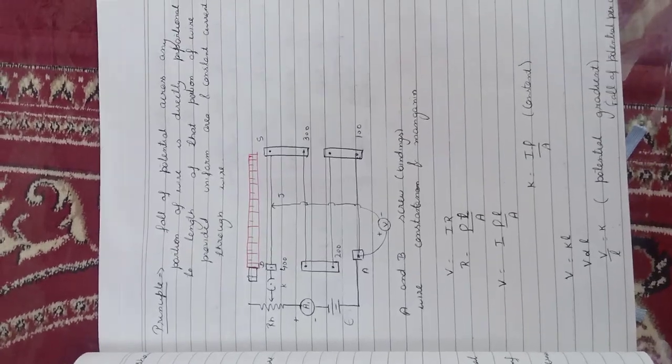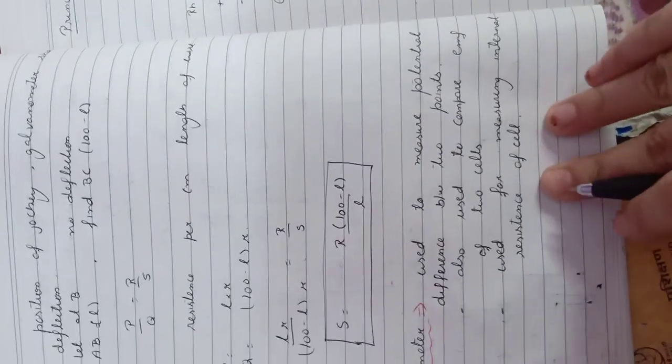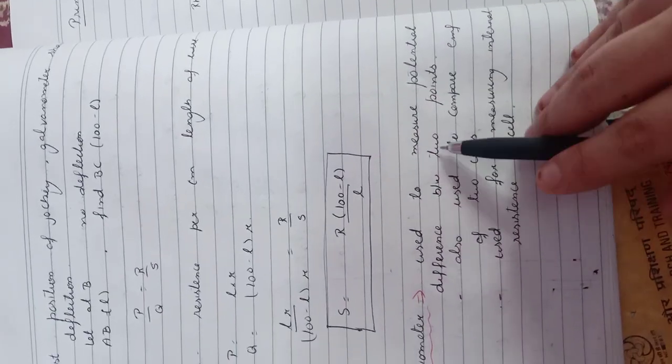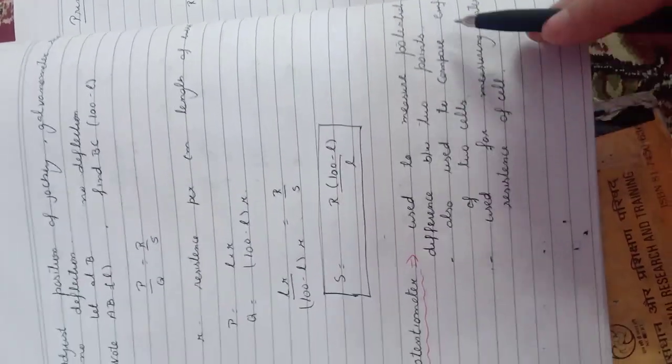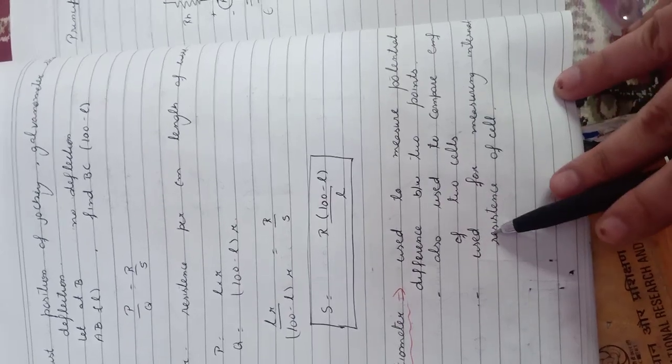V upon L equals K. This term K is known as the potential gradient, which means the fall of potential per unit length. Next, we will study the applications of the potentiometer: how it measures potential difference, how it compares the EMF of two cells, and how it measures the internal resistance of a cell.